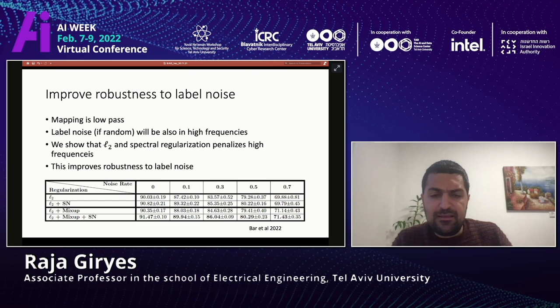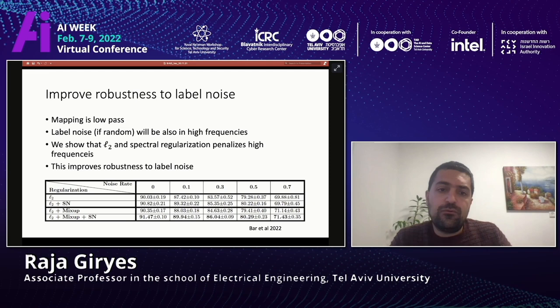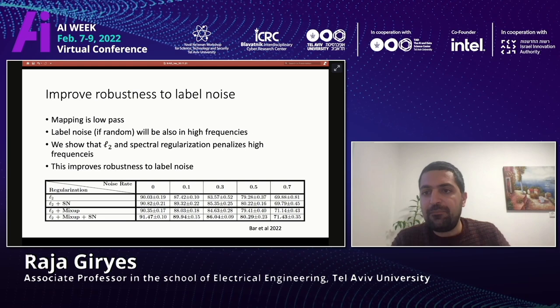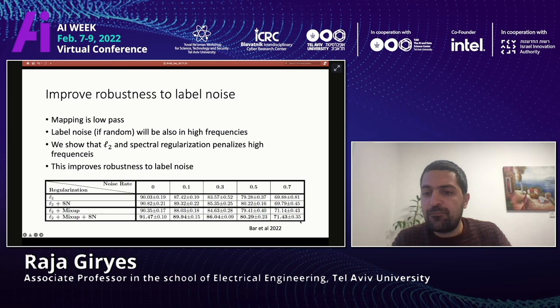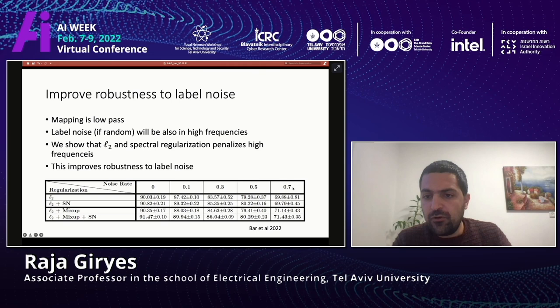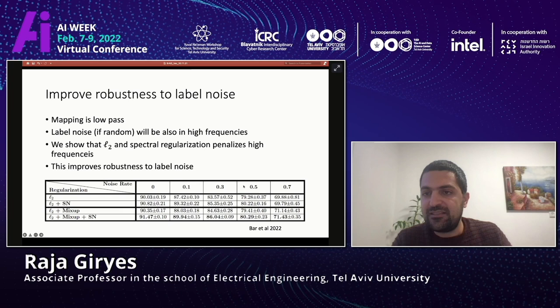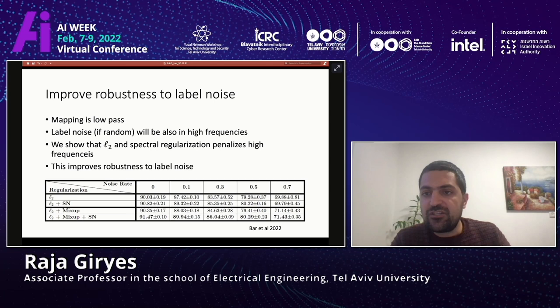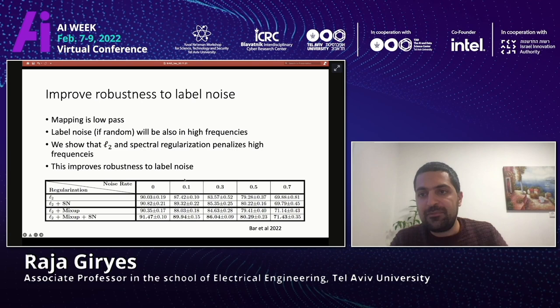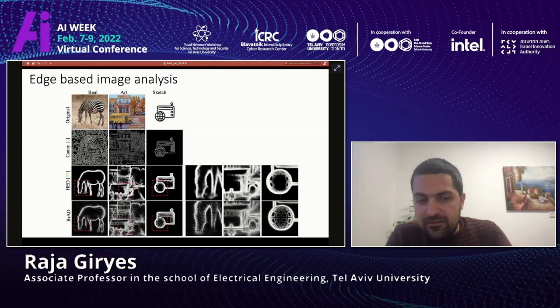In a recent work with my student, we have shown that L2 and spectral normalization penalize high frequencies in the mapping that the network induces. Therefore, using them in neural network training gives improved performance when training data has label noise. Results show that at 10%, 30%, and 50% label noise levels, L2 normalization and spectral normalization improve robustness to label noise. This demonstrates how Fourier analysis helps us understand what happens in the network and how to improve performance.